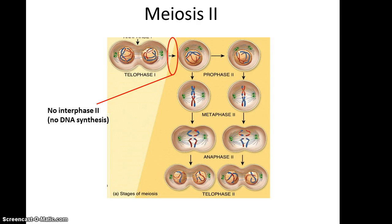At the end of telophase 1, you do not have interphase 2 and you do not get any additional DNA synthesis. Instead, it goes straight into prophase 2, then metaphase 2, anaphase 2 — these are pretty much identical to what you'd expect. Finally, telophase 2 leads to four cells with only 23 chromosomes each, and they are all genetically distinct from each other.